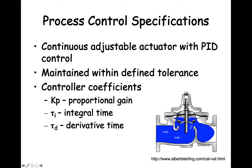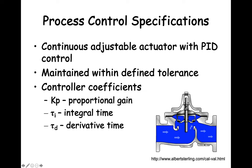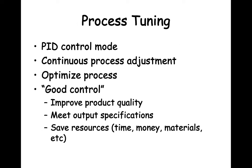In addition to maintaining the precise output within some specified tolerance, good control is assessed by how the system responds to a step change in either the setpoint or a process input. The size of the step change will depend on the expected setpoint or load changes the process would be expected to experience. Process tuning is used with PID control and it's an effort to find the values of Kp, tau i, and tau d to calculate the actuator process adjustment needed to get the process output within desired tolerances. The actuator must be continuously adjustable, and you are trying to find the best settings of Kp, tau i, and tau d to optimize the process and get good control.